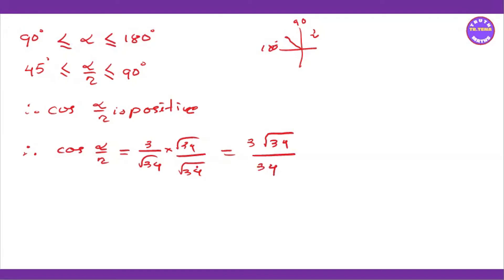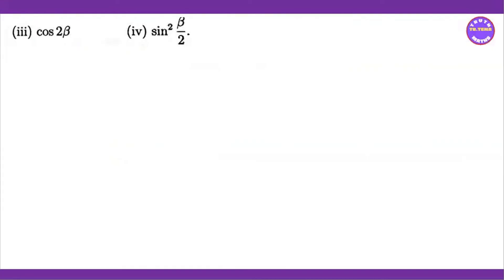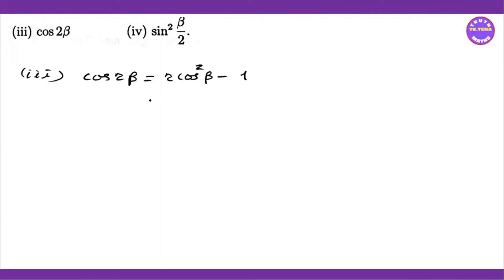For the double angle formula of cos 2β, we use the identity: cos 2β = 2 cos² β minus 1. Since cos beta equals 4 by 5, we compute 2 times (4/5) squared minus 1 to get the final value.